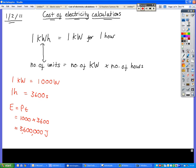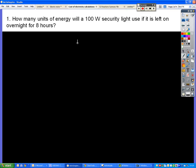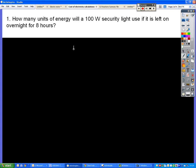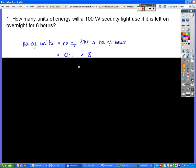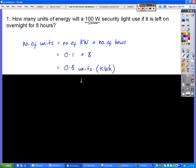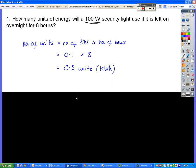So if we go on to look at some calculations for that, how many units of energy will a 100 watt security light use if it's left on for 8 hours? Number of units is number of kilowatts times the number of hours, so that's 0.1. You take your watts and you divide it by 1,000 to get into kilowatts. 0.1 times 8 gives you 0.8 units, which is the same as saying 0.8 kilowatt hours.